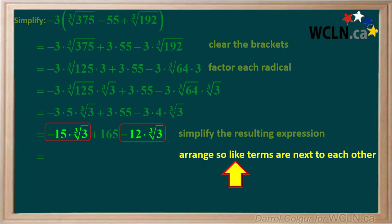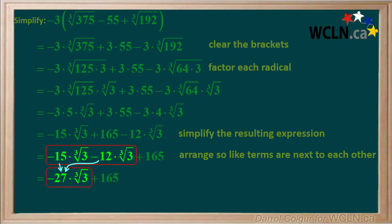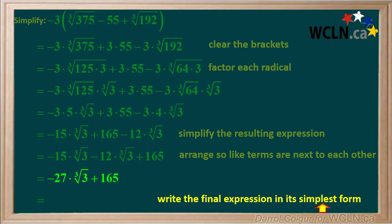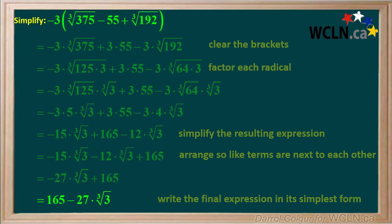Negative 15 times the cube root of 3 and negative 12 times the cube root of 3 are like terms, so now we rearrange the expression so that like terms are next to each other. Negative 15 times the cube root of 3 and negative 12 times the cube root of 3 add up to negative 27 times the cube root of 3. It would be simpler if we exchanged the positions of the two terms, to give us 165 minus 27 times the cube root of 3.